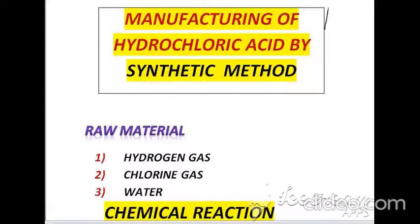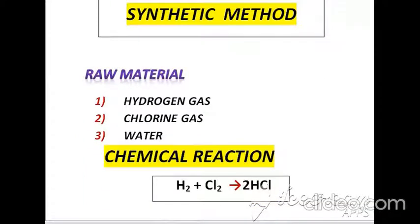For manufacturing of hydrochloric acid by the synthetic method, the raw materials are: hydrogen gas, chlorine gas, and water. According to the chemical reaction, hydrogen gas and chlorine gas react with each other at high temperature of 2500°C in a special furnace. After that reaction, we obtain hydrochloric acid gas, and after absorption of that gas into water, we obtain hydrochloric acid in liquid phase.